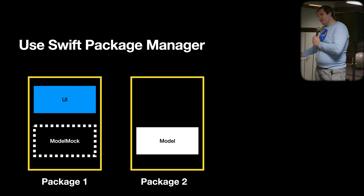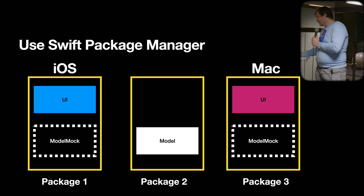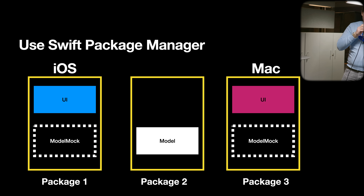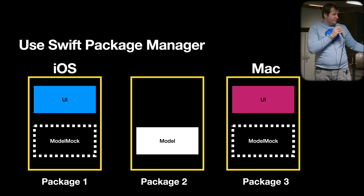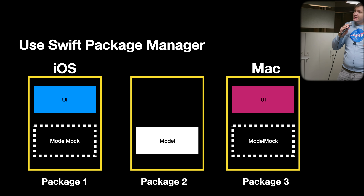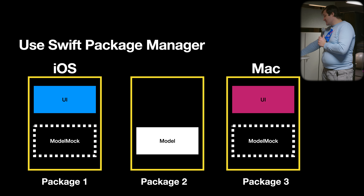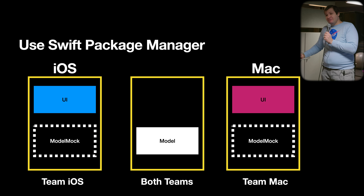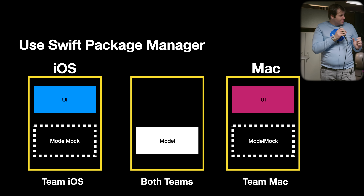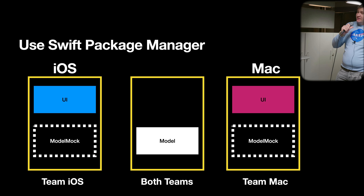We can expand this further and create a special target for Mac in a separate package. Now we have a separate UI for Mac building against the model mock, and a UI for iOS also building against the mock. When you want to build the real app or test real functionality, you build against the real model. Since we're talking about scale, these packages can be developed by different teams — when working on iOS, you don't touch Mac, and vice versa. There are no conflicts and no merging issues.